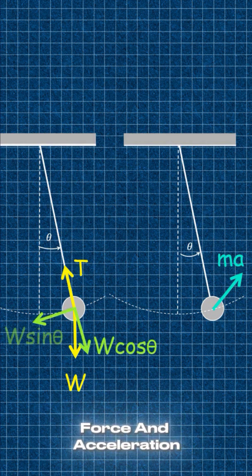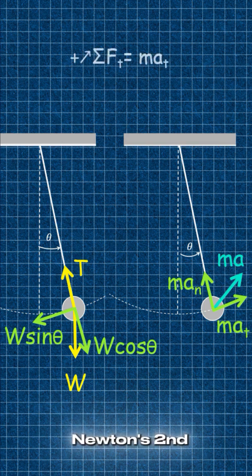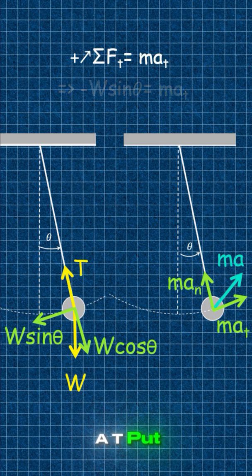Now let's resolve force and acceleration along tangential and normal direction and apply Newton's second law along tangential direction, which gives minus w sine theta equals mat. Put w equals mg.